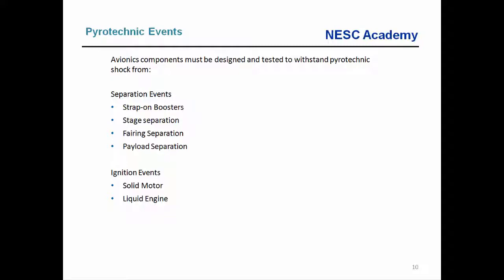With launch vehicles we can have several types of separation events: jettison of strap-on boosters, stage separation events, fairing separation events — the fairing being a clamshell structure enclosing the payload — as well as payload separation, typically via a clamp band or V-band with bolt cutters. Ignition events, particularly for a solid rocket motor, can also produce fairly severe shock. There are also point-source devices such as pyrovalves and pyrotechnic valves, and miscellaneous bolt cutters and other pyrotechnic components.